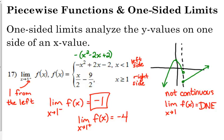They're only looking for the one from the left. I'm just using this as a multi-part example. They didn't ask us for the two-sided limit, but if there wasn't a plus or a minus, you'd have to plug it into both pieces. If they both gave negative 1, the two-sided limit would be negative 1. But since they are not the same number, the two-sided limit for this function does not exist as we approach 1.